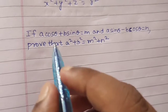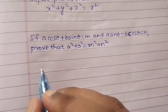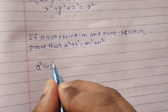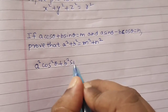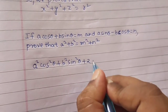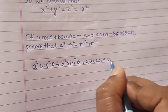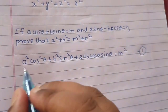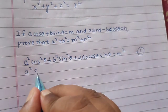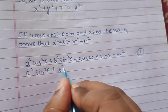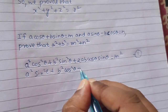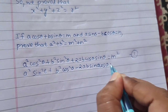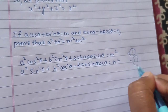Let's start the proceedings. We are squaring both sides of both equations. From the first equation we get: a²cos²θ + b²sin²θ + 2ab·cosθ·sinθ = m² — this is equation 1. From the second equation we get: a²sin²θ + b²cos²θ - 2ab·sinθ·cosθ = n² — this is equation 2.